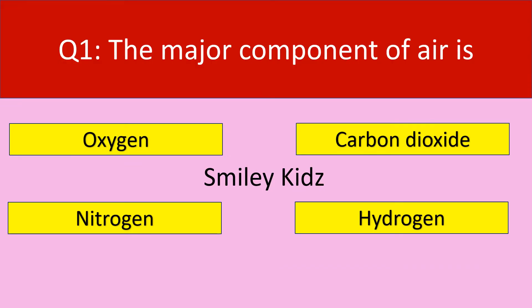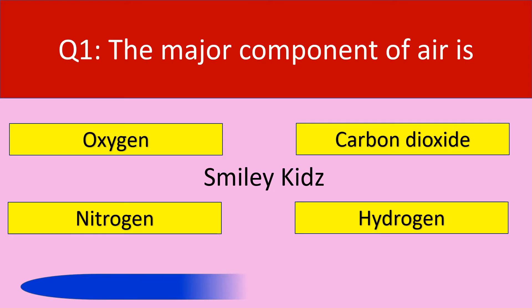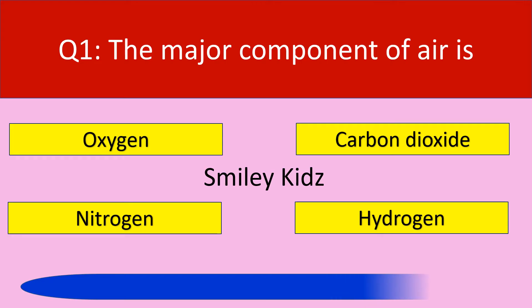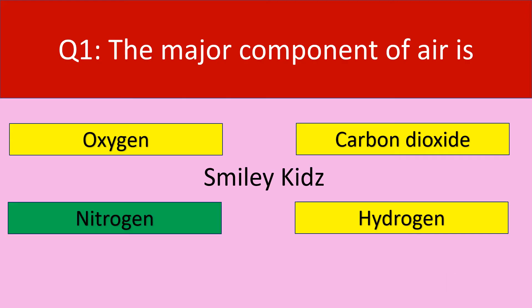Question number 1: The major component of air is — your options are oxygen, carbon dioxide, nitrogen, hydrogen. The correct answer is nitrogen. The major component of air is nitrogen.